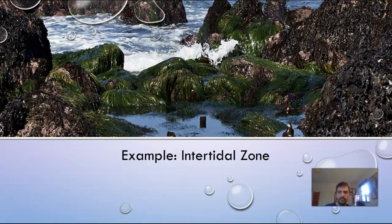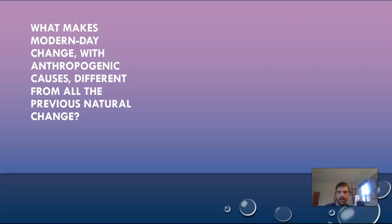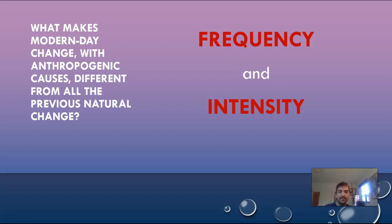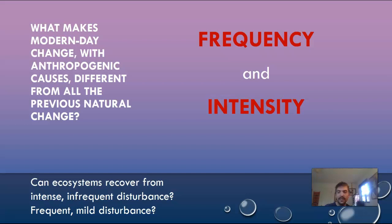So what makes modern-day change with anthropogenic, or human, causes different from all previous natural changes? The answer is frequency and intensity. Can ecosystems recover from intense infrequent disturbances, or from frequent mild disturbances? We are constantly interfering with ecosystems in different ways, and we are pervasive — everywhere.